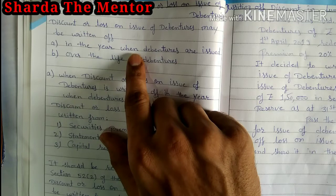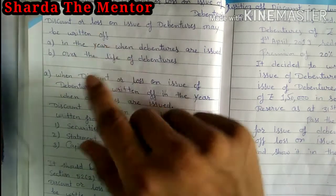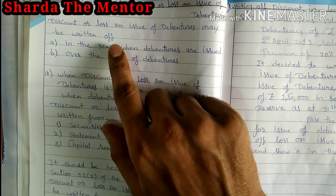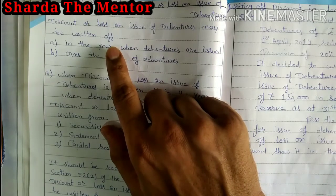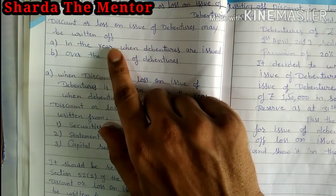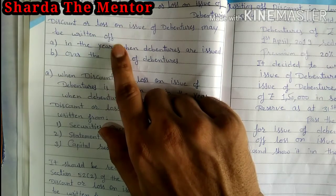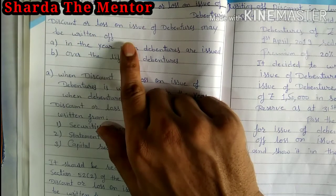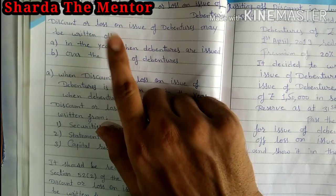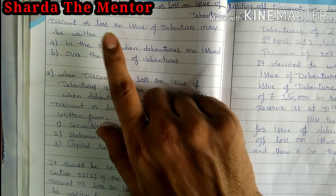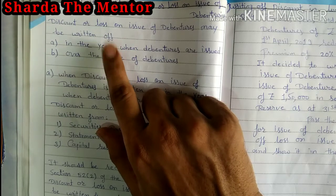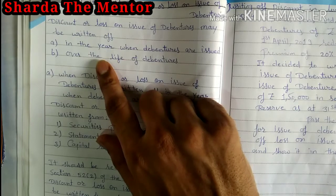Whatever the loss by issuing debentures in terms of discount should be written off. For example, ₹10 lakh rupees of debentures issued at a 5% discount means ₹50,000 will be the discount, and that should be written off in the current year, say 2020. That is the lump sum method — we have already seen that type of question in the previous video where we write off all the loss in the same year. The second method is to write off over the life of the debenture.